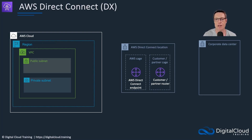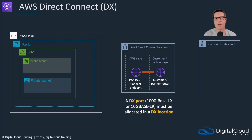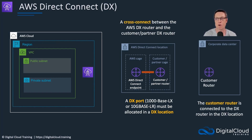To establish connectivity, first you need to get a DX port assigned in the DX location. When you order a connection from AWS, they provide information including the port within the DX location that you need to connect to. If you have a presence in that location, you can ask the data center to patch a wire between your equipment and the AWS equipment. Alternatively, you use a partner — a managed service provider who has equipment in that location and patches between their equipment and yours. You then need to connect from your customer router in your data center through to the DX location.